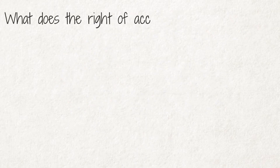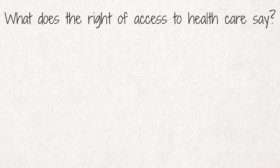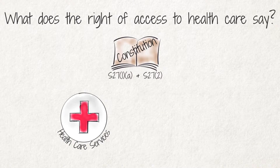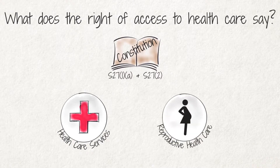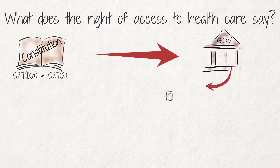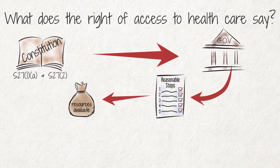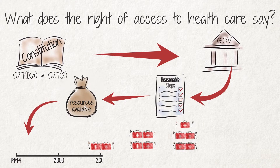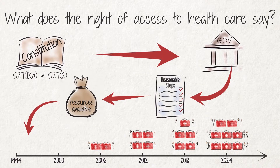What does the right of access to health care say? Section 27(1)(a) and 27(2) grant everyone the right to access to health care services, including reproductive health care. The state must take reasonable steps within the resources available to it to ensure that all people get equal access to quality and complete health care over time.